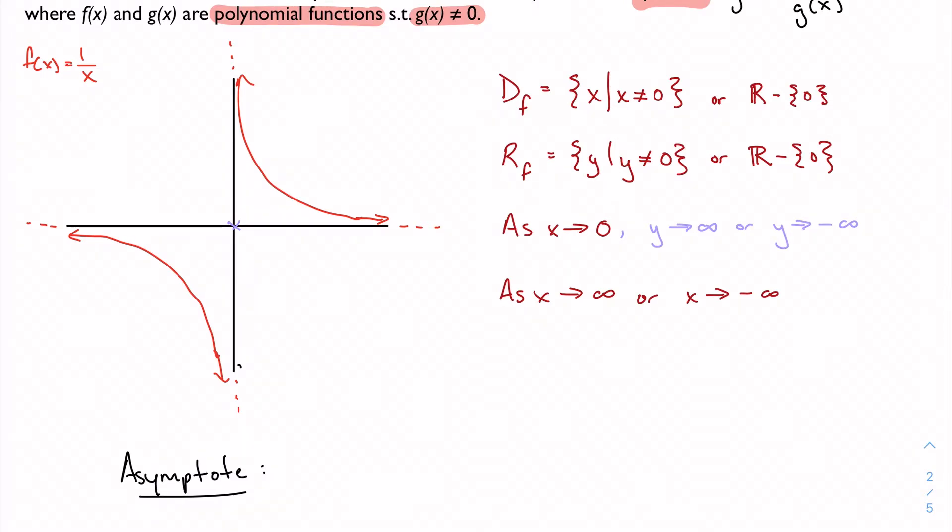As x approaches infinity or negative infinity, that is increasing and decreasing without bound. As I go out this way, my graph gets closer and closer to 0. Same thing happens as I approach negative infinity, closer and closer to 0. So y approaches 0.